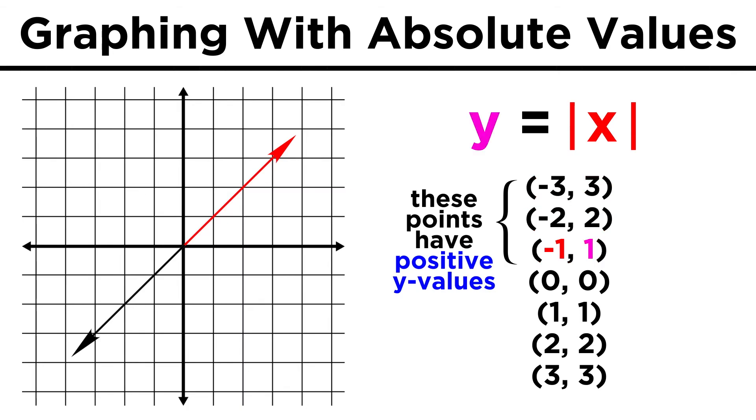When we plug in negative one for x, we don't get negative one for y, we get positive one. Negative two gives us positive two, and so forth.